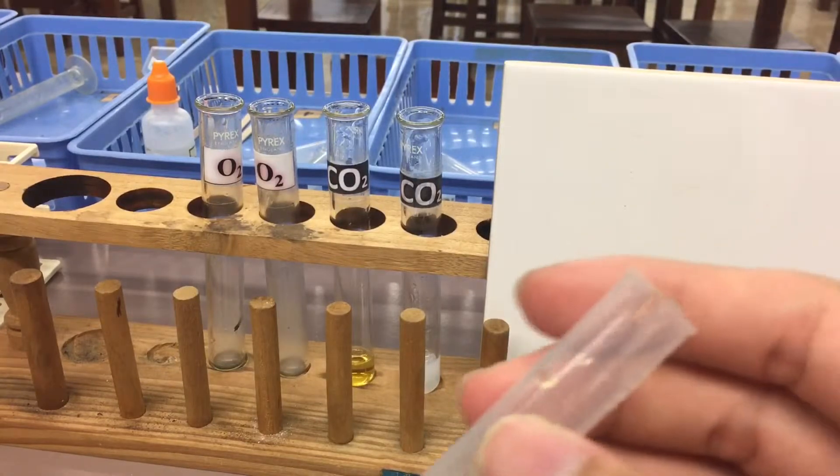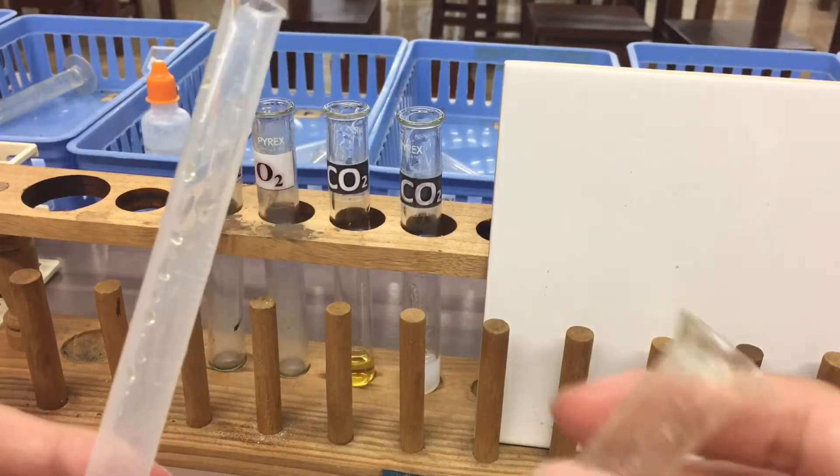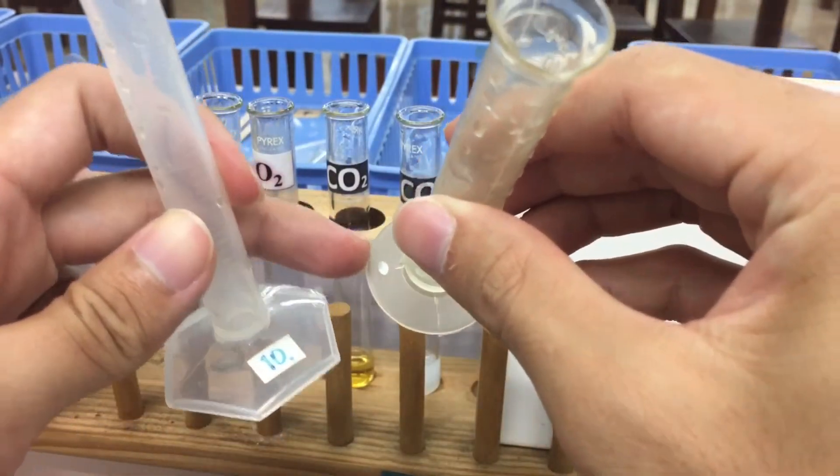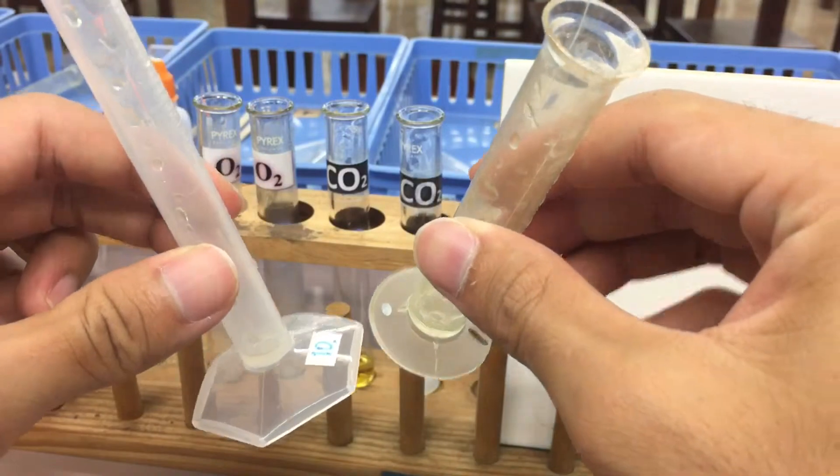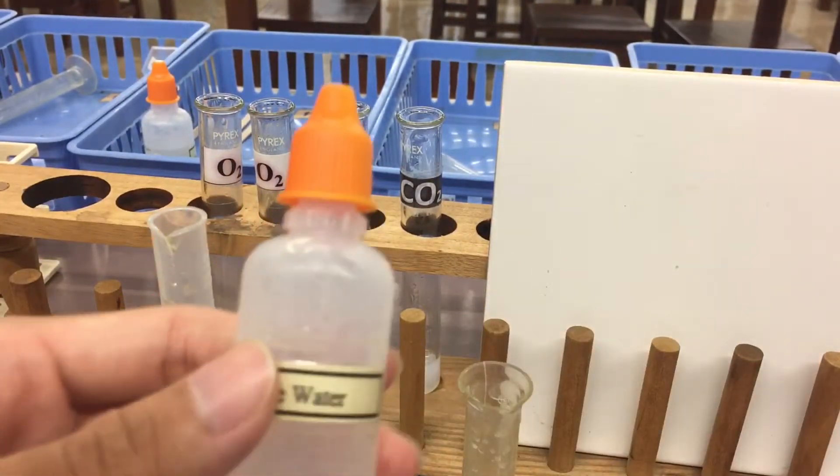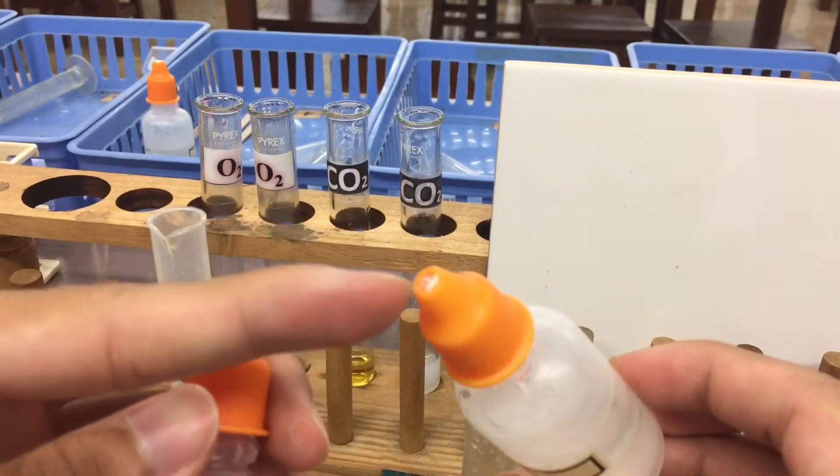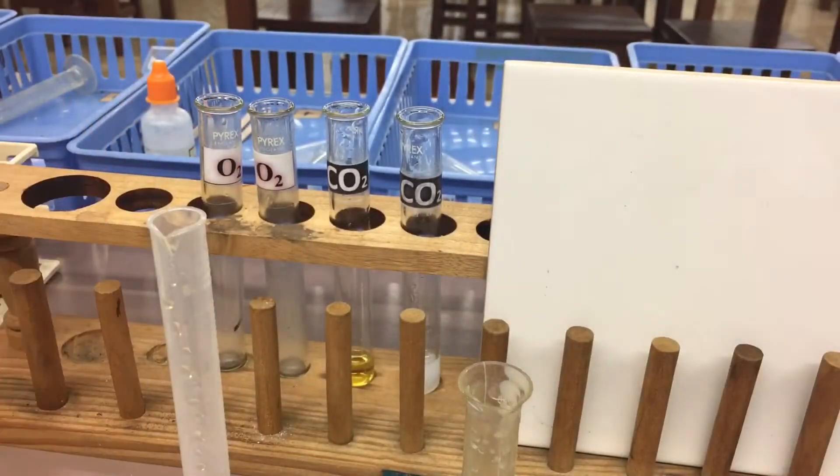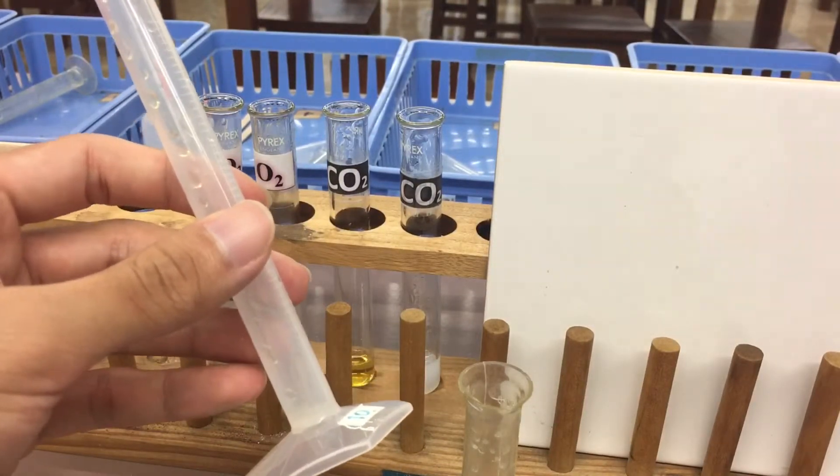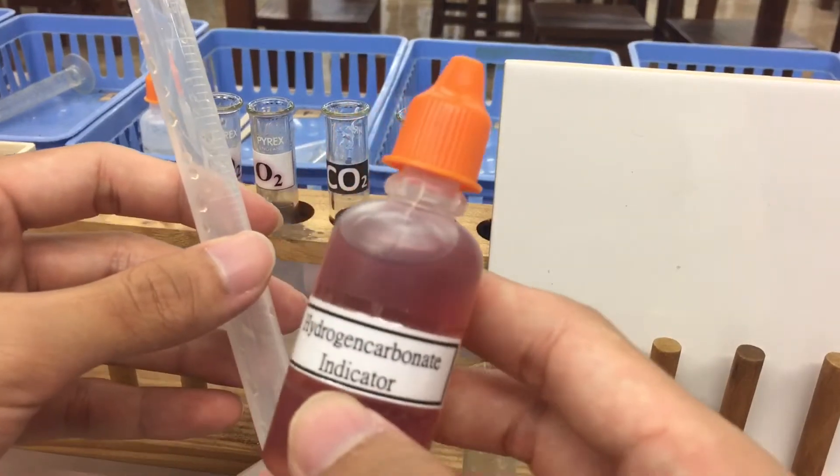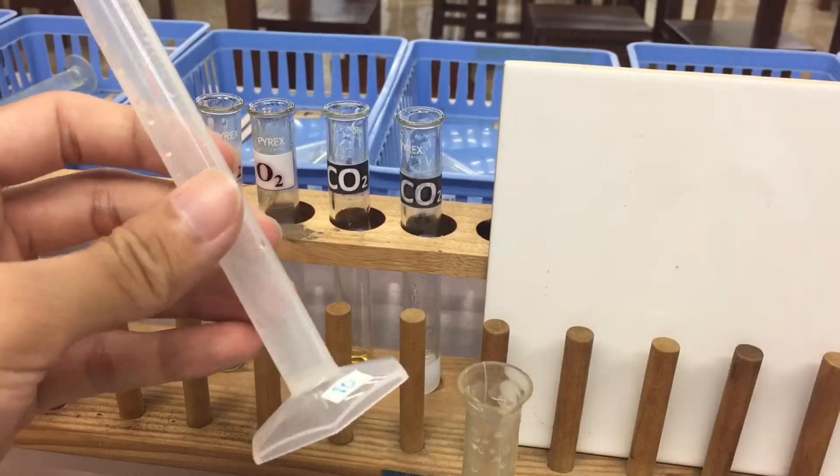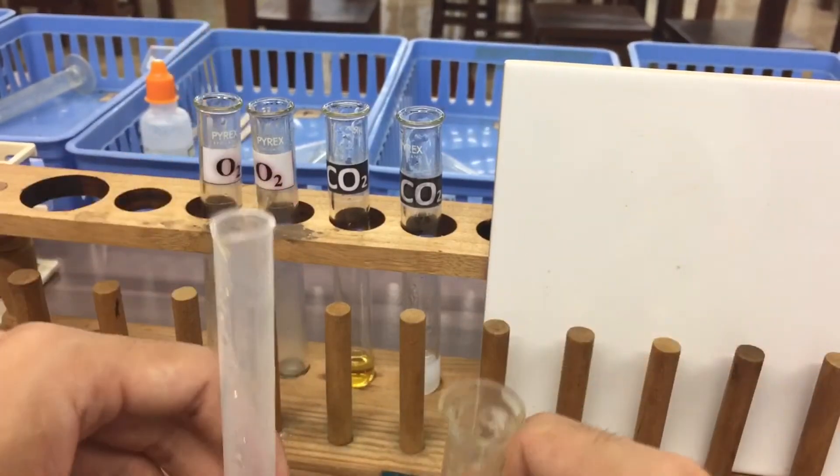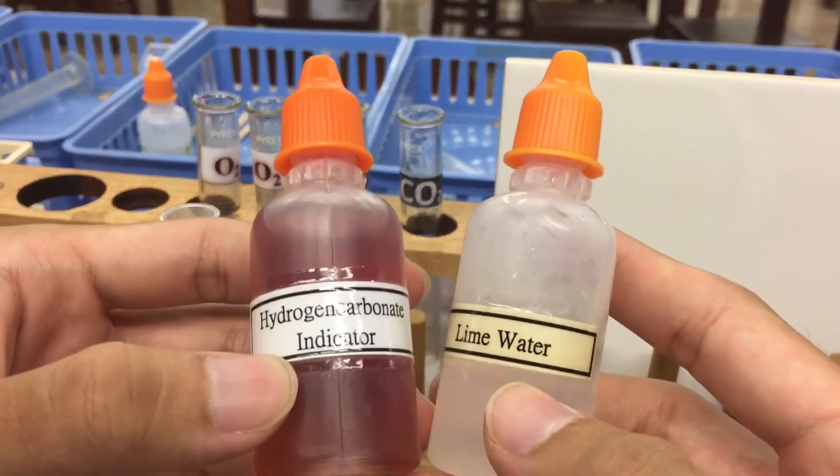You may notice that I use two measuring cylinders to hold the hydrogen carbonate indicator and lime water, because I marked a red dot on the measuring cylinder so that I know which kind of indicator I need to put in. If we use only one measuring cylinder to measure both indicators, it may contaminate them. So we need to use different measuring cylinders to measure two kinds of indicators.